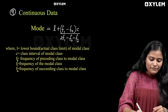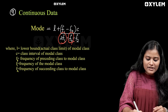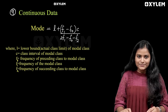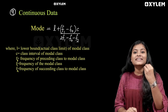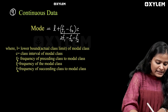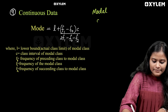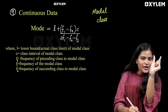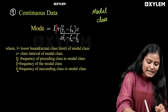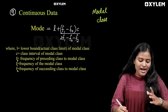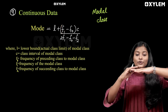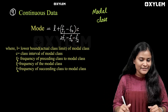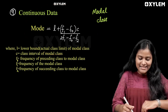We have to do a modern equation for continuous data. The mode formula is: L plus F1 minus F0, into C, divided by 2F1 minus F0 minus F2. What kind of F values and frequencies do we use? That is the modal class. We have to find the lower limit L, and F1 is the modal class frequency. F0 is the preceding frequency and F2 is the succeeding frequency.